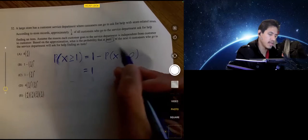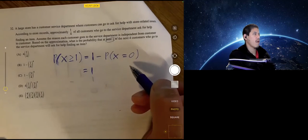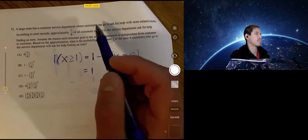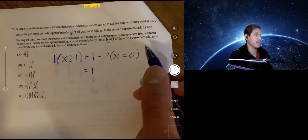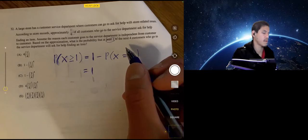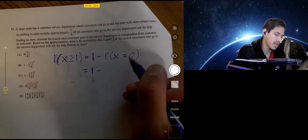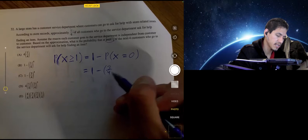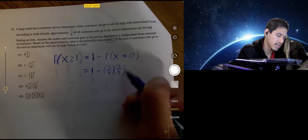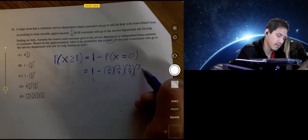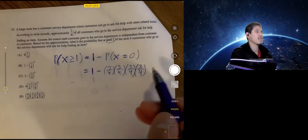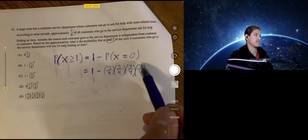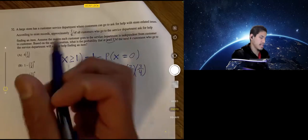So I'm going to do one minus, now let's break this down a little bit. If the probability that a customer goes to ask for help is one fourth, the probability that they don't go is three fourths. Because either they go or they don't go. Now if we're talking about four in a row, since they're independent, you would do three fourths times three fourths times three fourths times three fourths. That's the probability of four customers in a row not asking for help. And that's just one minus three fourths all to the fourth. And so our answer would be C.